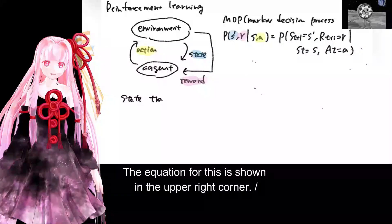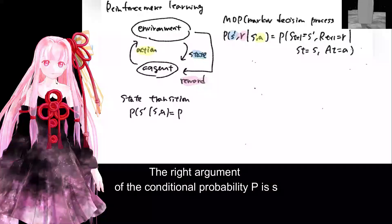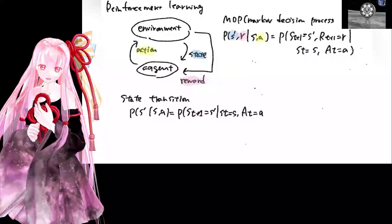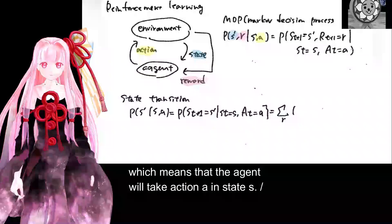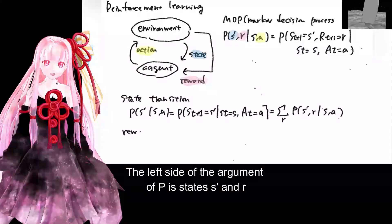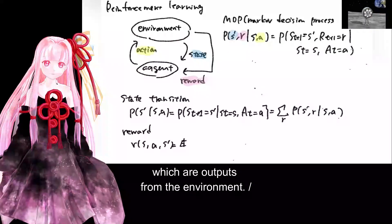The equation for this is shown in the upper right corner. The right argument of the conditional probability P is S, which means that the agent will take action A in state S. The left side of the argument of P is states S and R, which are outputs from the environment.